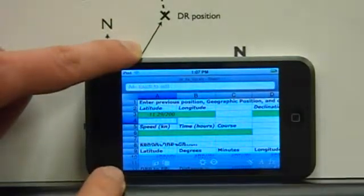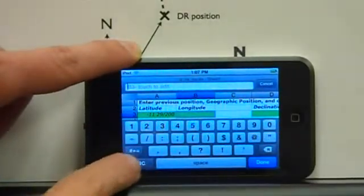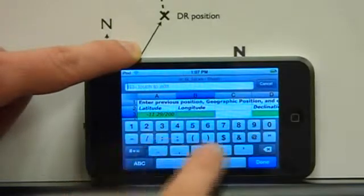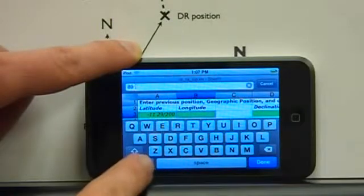The longitude is east 89 degrees and 7.3 minutes.